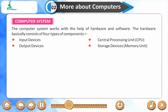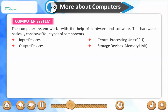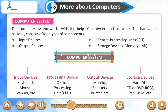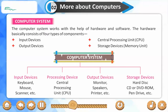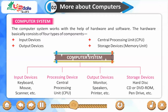The computer system works with the help of hardware and software. The hardware basically consists of four types of components: input devices (keyboard, mouse, scanner, etc.), the central processing unit (CPU), output devices (monitor, speakers, printer, etc.), and storage devices including hard disk, CD/DVD-ROM, and pen drive.